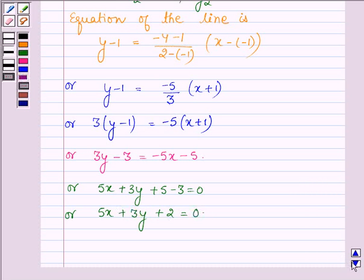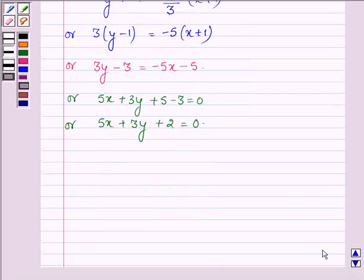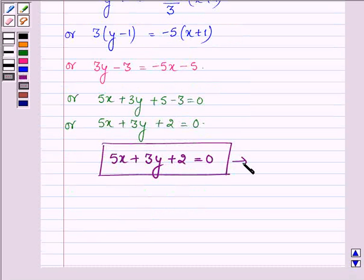Thus, the equation of the line which satisfies the given condition is 5x + 3y + 2 = 0. This is our answer. Hope you have understood it. Take care and have a good day.